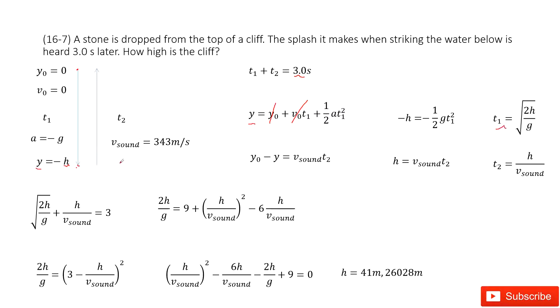And for T2, we can see the sound wave travels from the water level to the reference point. The total distance is H. And the speed is given for the sound wave, 343 meters per second.